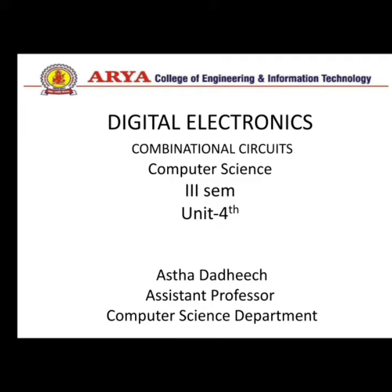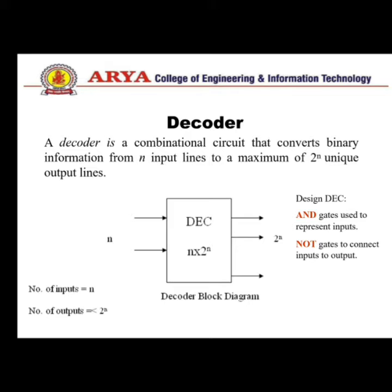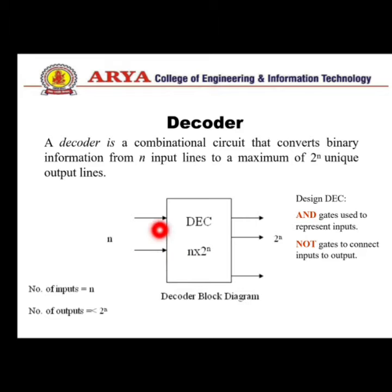Hello students, today we will discuss the second part of combination circuits: encoder and decoder. A decoder is a combination circuit that converts binary information from input lines to a maximum of 2-power-n unique output lines. This is the general block diagram of a decoder with n input lines and 2-power-n output lines. The outputs vary from 0 to 2-power-n minus 1. The enable line is activated when the decoder is active, and 0 when deactivated.